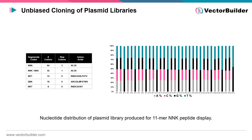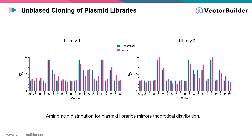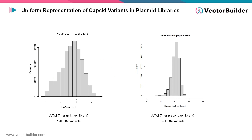Let's take a look at some data for random peptide display libraries generated at VectorBuilder. Researchers can utilize different degenerate codon strategies for mutational library generation, including NNN and NNK, which are the most popular as these strategies code for all 20 amino acids. For an 11-mer peptide library generated at VectorBuilder with an NNK strategy — where K represents the G or T nucleotide — our library of 33 nucleotides has a near-even distribution across all sites. This unbiased distribution of nucleotides results in an unbiased distribution of amino acids in the plasmid library, with the actual distribution mirroring the theoretical distribution for NNK mutagenesis strategies.